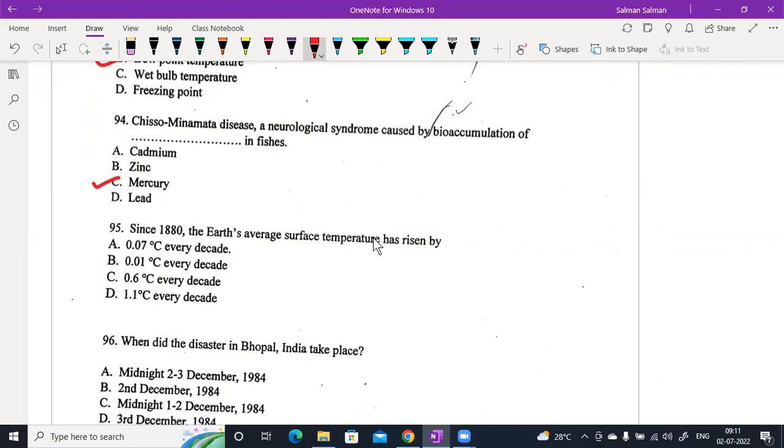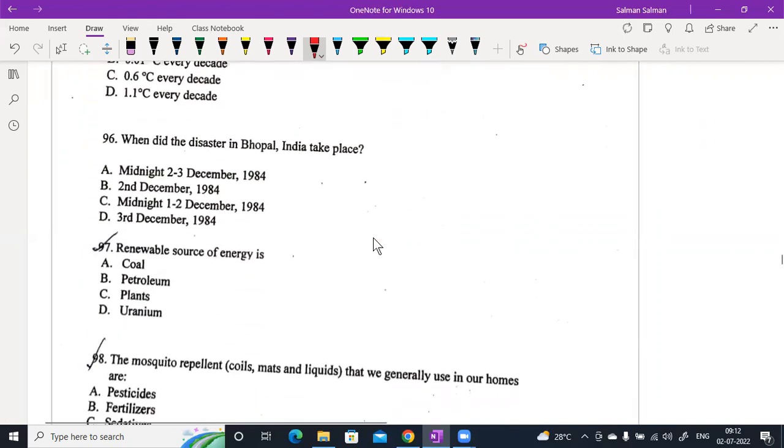Minamata disease, a neurological syndrome caused by bio-accumulation of mercury. Since 1880 the average air surface temperature is rising by - it is not an exact option. There are many combinations. We can take the best possible option, that is option A. This is the best possible option. When did the disaster in Bhopal, India take place? It is midnight 2-3 December 1984.